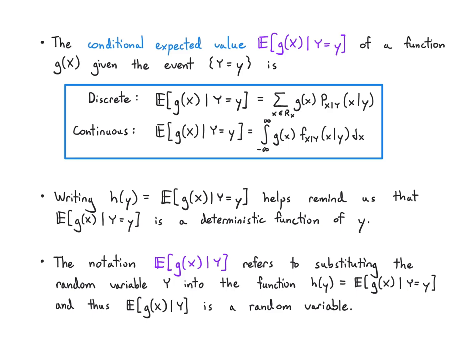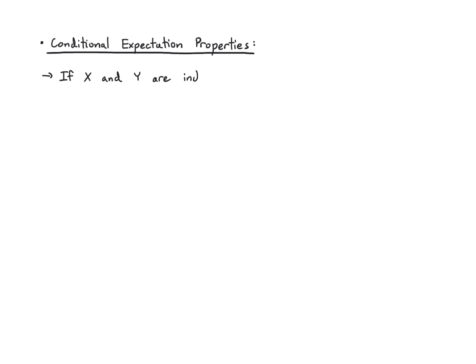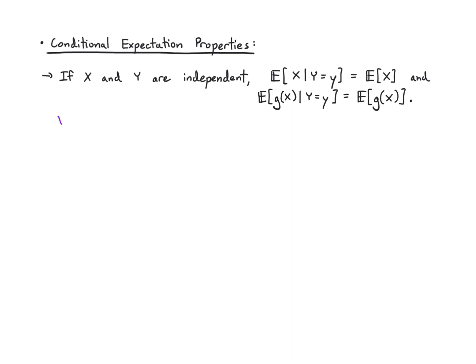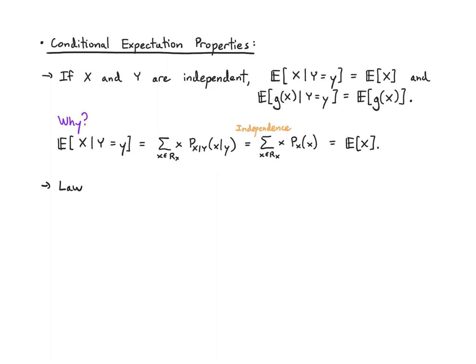A couple of properties. For conditional expectation, if you have two random variables X and Y that are independent, then when you take conditional expectations you just get the expectation — it doesn't depend on Y. That makes sense because if two random variables are independent, they can't help predict one another. Formally, independence changes the conditional PMF into a marginal PMF, and that's just the expected value of X.